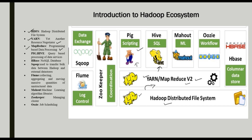Next is HBase — that is a NoSQL database. If we have HBase, we can store data in HDFS. At the bottom level, we use a columnar base. We can store structured and unstructured data using HBase. Sqoop is used to transfer bulk data between Hadoop and external data stores.